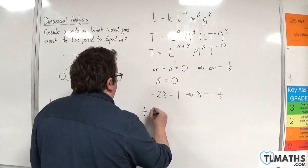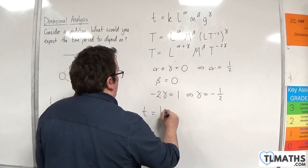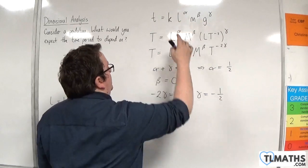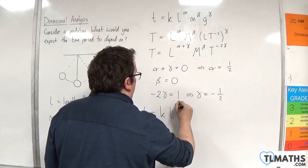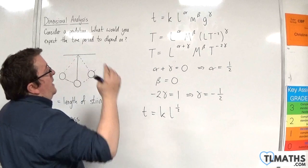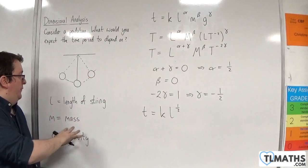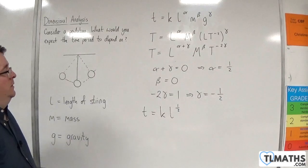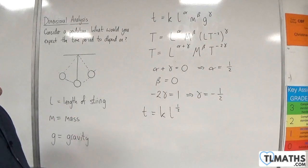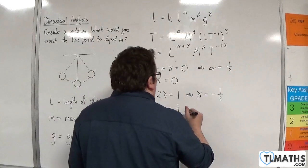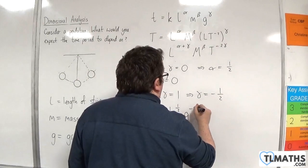So we've got T is equal to K times L to the alpha, so L to the half. M to the 0, so we can leave that off, so the mass doesn't come into it. It was a good guess, but it didn't come into it. That's fine. Then G to the gamma, which is minus 1 half.